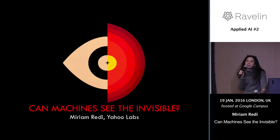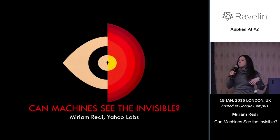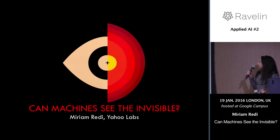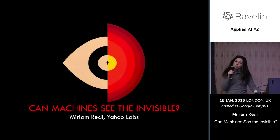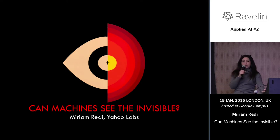In the context of applied AI, probably computer vision is one of the main topics. In computer vision, what we do is teach machines to see and understand images and videos, and recognize objects and scenes. Today I will show you a particular aspect of machine vision: research we have been doing at Yahoo Labs to estimate through computer vision subjective image properties.